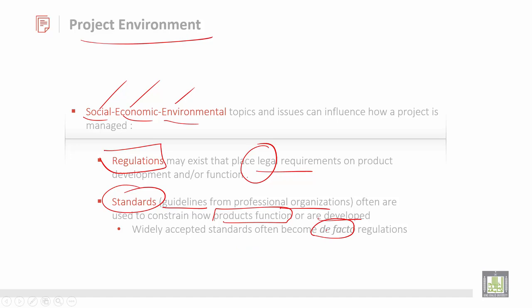What do you mean by de facto regulation? De facto regulation — sometimes it might be right or sometimes it might be wrong, but it has to be done in a very proper and efficient manner. That is why we say it is a de facto regulation. You should consider and abide by the rules and regulations of the particular product or area where you start the project.